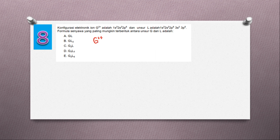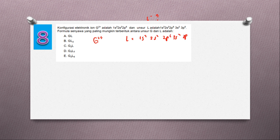Kalau ada kation atau ion bermuatan positif, berarti harus ada yang bermuatan negatif karena ada serah terima elektron untuk membentuk ikatan ion. Jadi L harus L minus berapa. Kita lihat konfigurasi L: 1s2, 2s2, 2p6, 3s2, 3p5. Elektron valensinya 2 tambah 5, yaitu 7 elektron terluar. Supaya dia stabil memenuhi aturan oktet, si L ini harus menerima 1 elektron, jadi L minus.